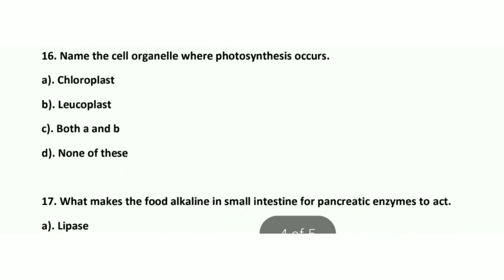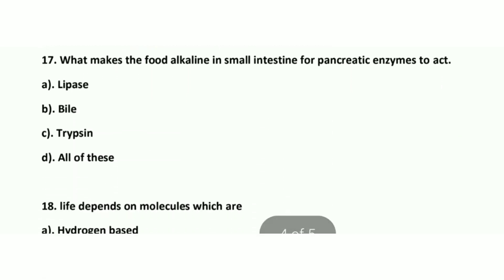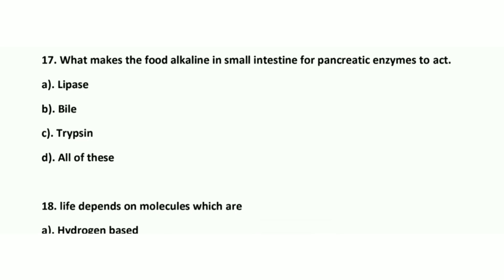Question number 16: Name the organelle where photosynthesis occurs. The right option is chloroplast. Option A. Question number 17: What makes the food alkaline in the small intestine for pancreatic enzymes to act? The right answer is bile. Option B.